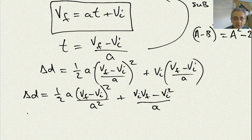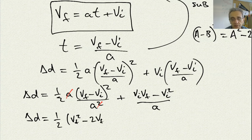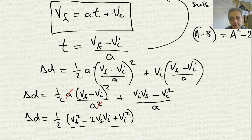Now I can rewrite it again, but this time I'm going to have, actually, that a disappears. So this a, if I use a different color, this a cancels with that square. So if I write it again, I'll have v-f squared minus 2v-f-vi plus vi squared. All that is divided by a.